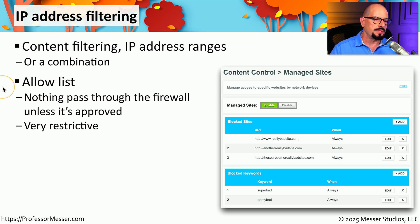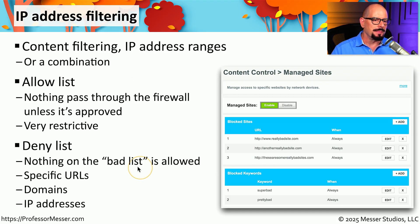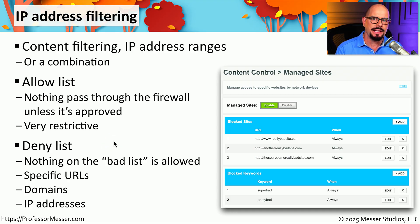You usually have the option of setting an allow list so that nothing passes through the firewall except the things that you specify. This is the most restrictive setting because every IP address or website you'd like to visit needs to be added to the firewall. A more common implementation is the deny list, where you're allowed to visit any site except the ones specifically listed in the security policies — so everything else on the internet is effectively available.